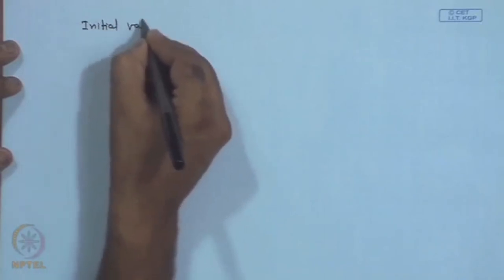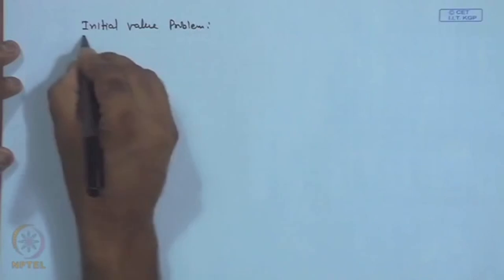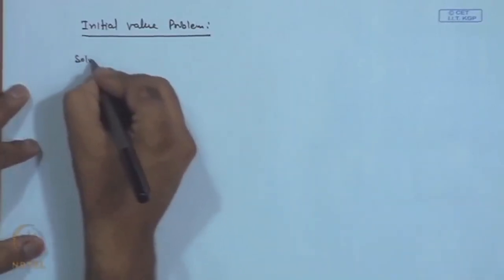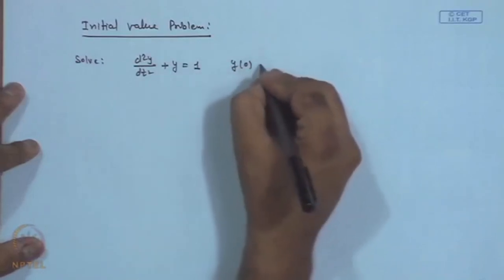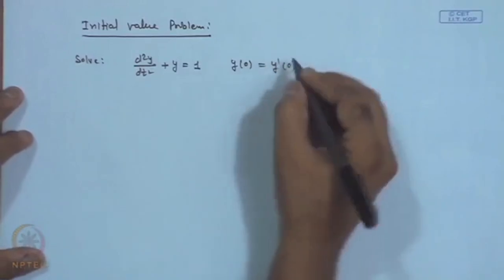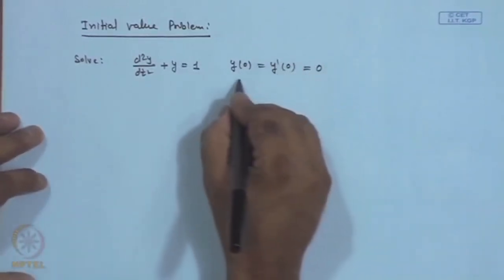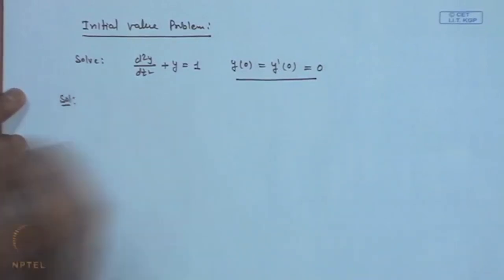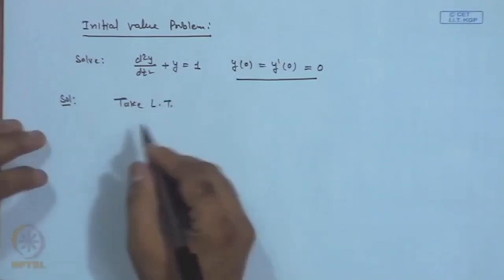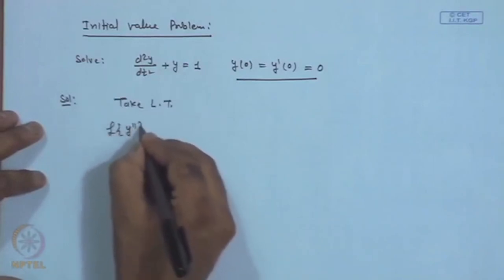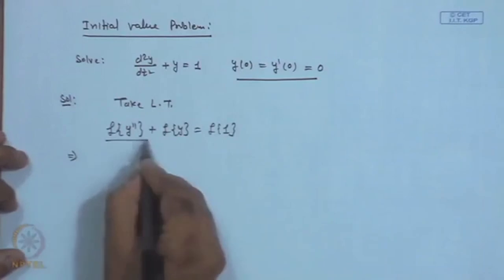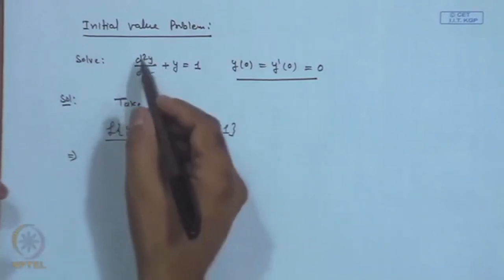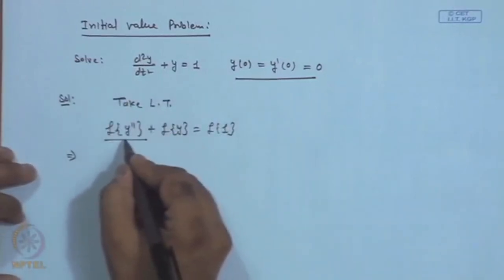Let us start with an initial value problem. We want to solve d²y/dt² + y = 1, with initial conditions y(0) = 0 and y'(0) = 0. As the first step, we take the Laplace transform of both sides: L{y''} + L{y} = L{1}. By the derivative theorem, we have s²·L{y} − s·y(0) − y'(0) + L{y} = 1/s. This Laplace transform technique is well-suited for initial value problems because the initial values are incorporated directly.